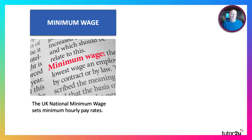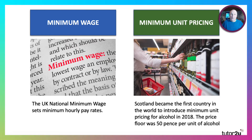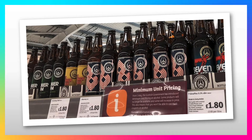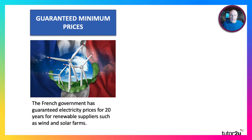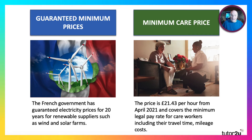The different types of minimum prices: minimum wage in the UK has been around since 1999, so nearly 25 years now. Scotland became the first country in the world to introduce minimum unit pricing for alcohol six years ago — originally 50 pence per unit, with a proposal to lift that to 65 pence. The French government has guaranteed electricity prices for two decades for renewable supplies such as wind and solar farms. The government has also brought in a minimum care price, covering the legal minimum pay rate for care workers, including travel time and mileage costs.